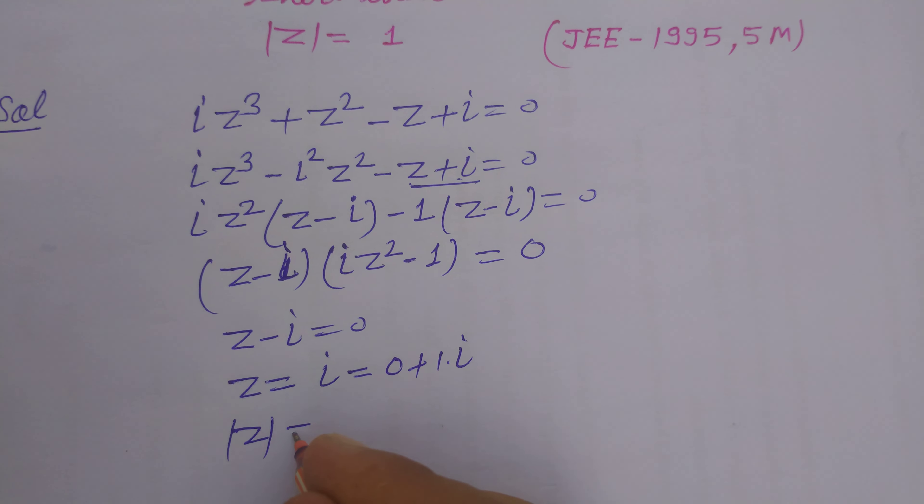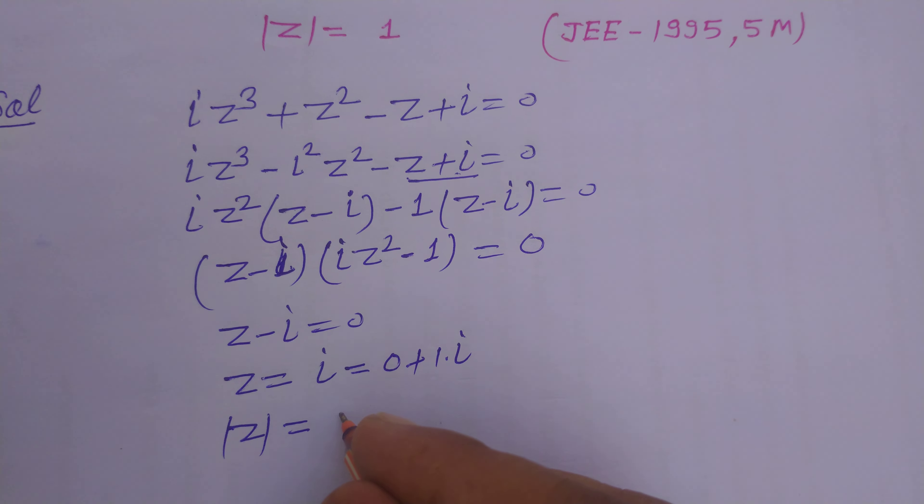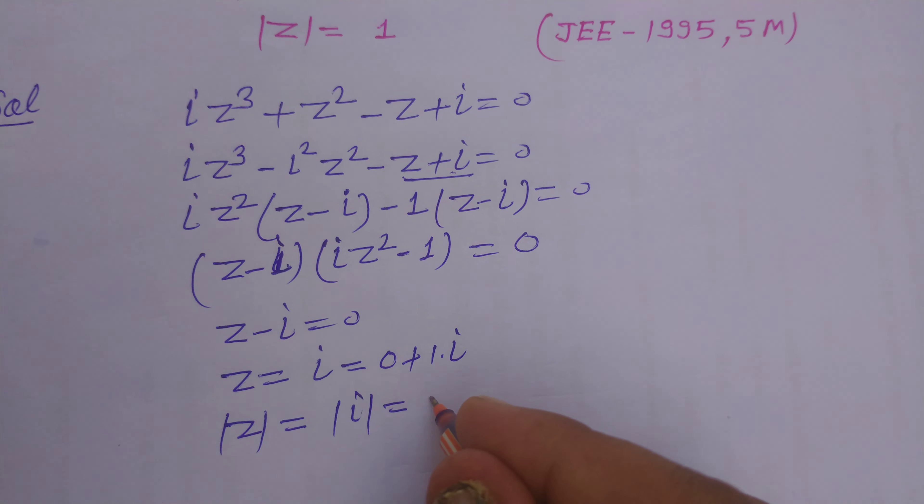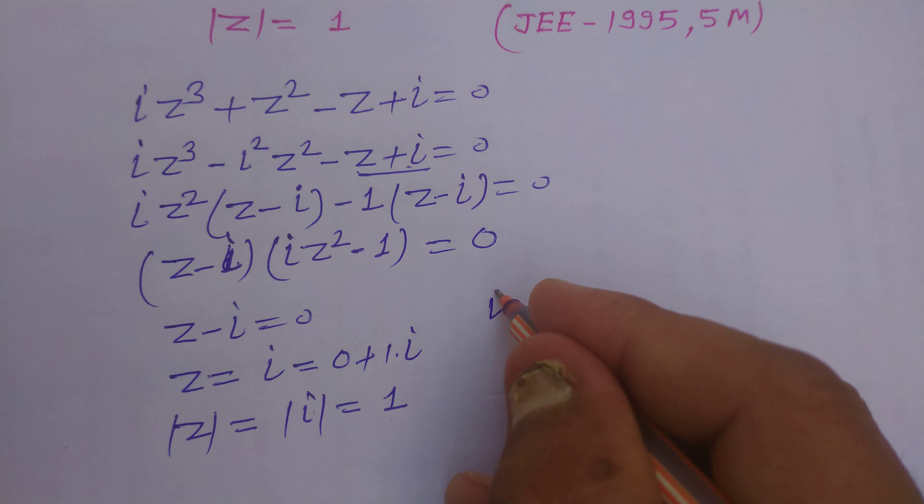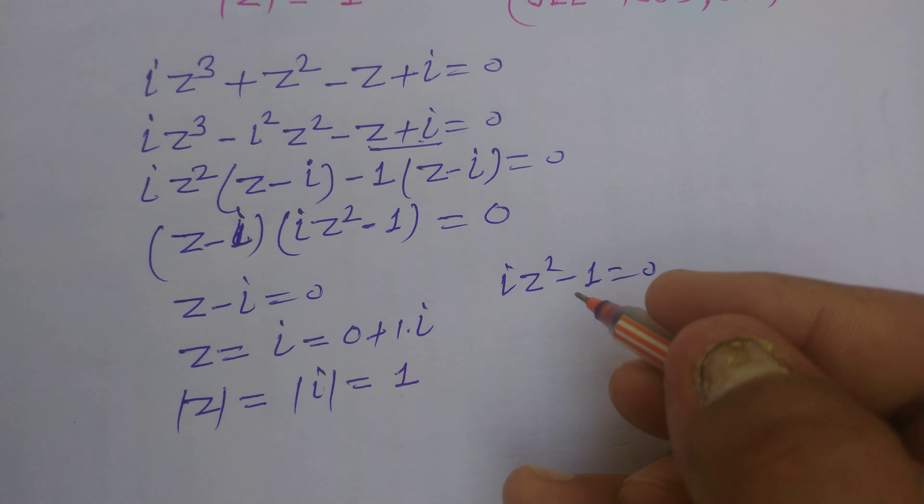So modulus of z equals modulus of iota which equals 1. And from this, iota z squared minus 1 equals 0.